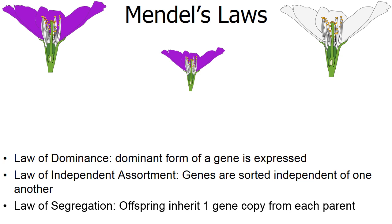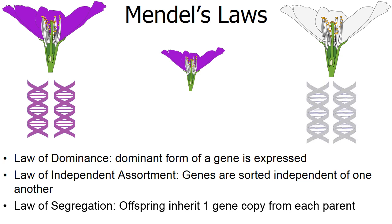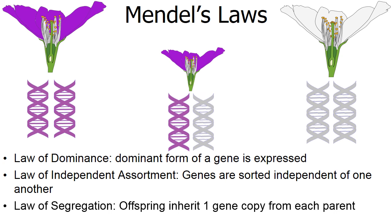And finally, the law of segregation: offspring inherit one gene copy from each parent. Since we all have two parents, we have two copies of every gene in our DNA. For instance, the purple flower has two copies of the purple gene, and the white flower has two copies of the white gene. But the offspring receives one from each parent. The genes are segregated during chromosome formation and during the process of meiosis and the formation of eggs and sperm. So the offspring only inherit one copy from each parent.